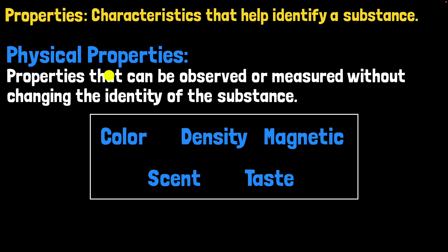You may be wondering: are there properties that, when you measure or observe them, can change the identity of the substance? Yes, they can, and we call them chemical properties. We won't worry about chemical properties in this video — we'll talk about them in other videos.